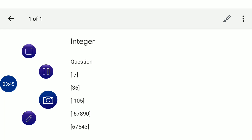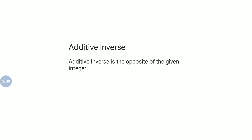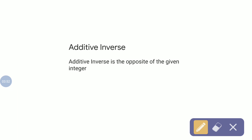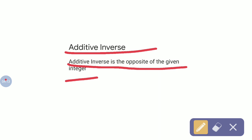Now let's come to additive inverse. In absolute value, the sign gets completely removed, and we write down the number after removing the sign as it is — the number does not change, we just remove the sign and write down the number. In additive inverse, what happens? Additive inverse is the opposite of the given integer.